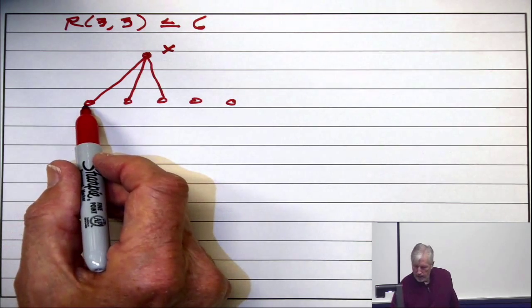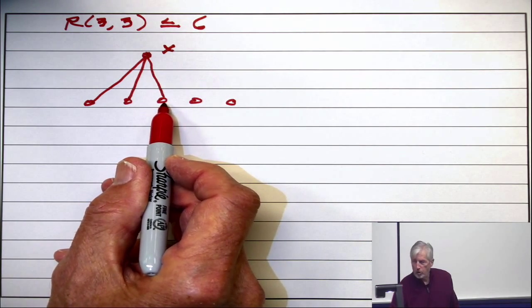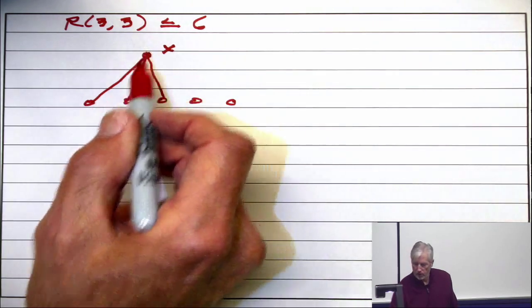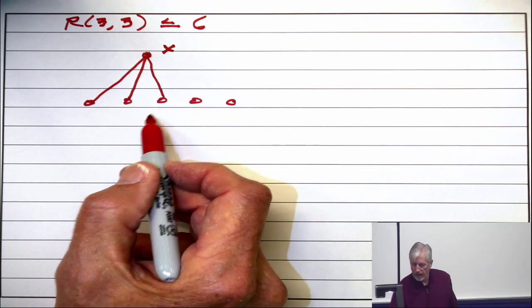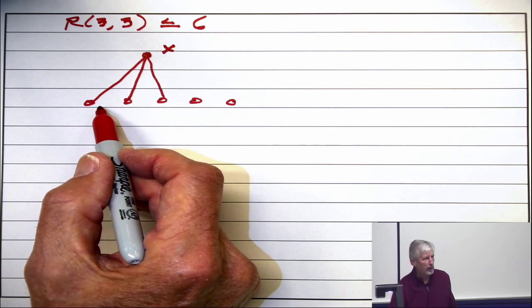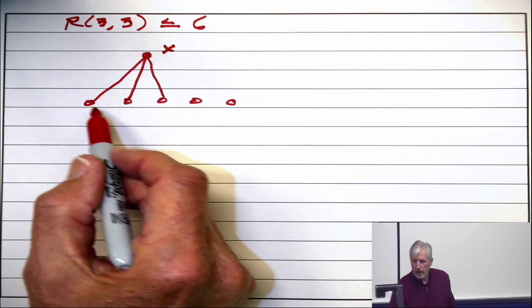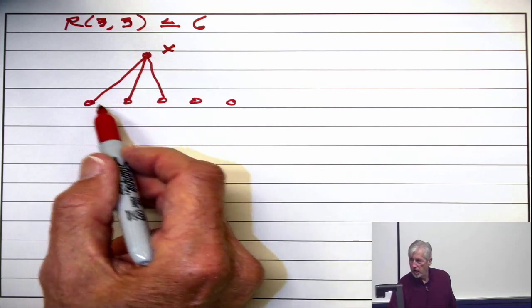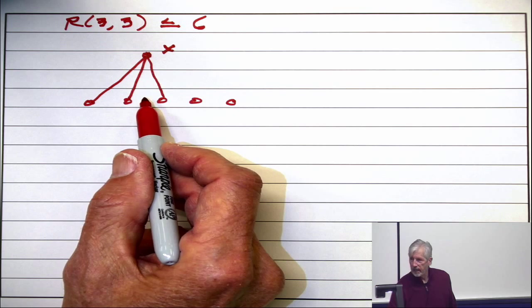If there's an edge, say here, do you see the K3? The X together with this one, together with this one, if that were an edge, would form a K3. So if any pair is an adjacent pair, I get a K3.